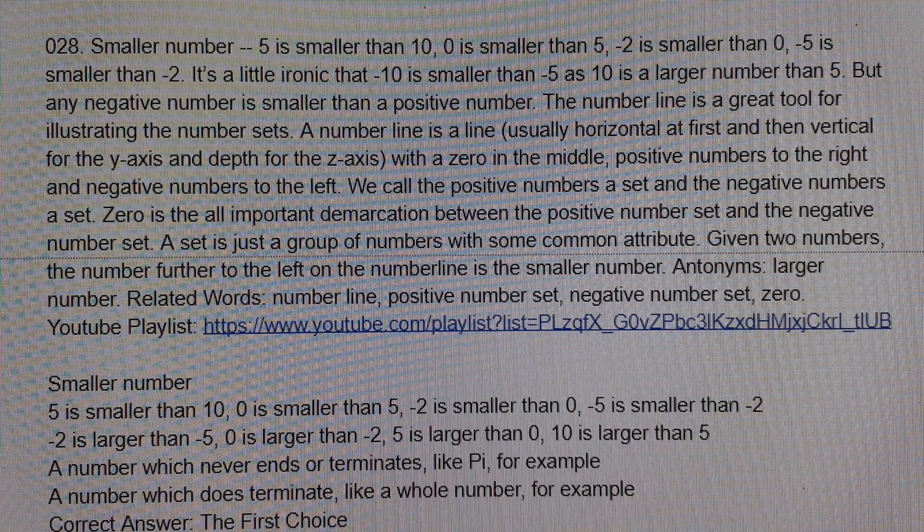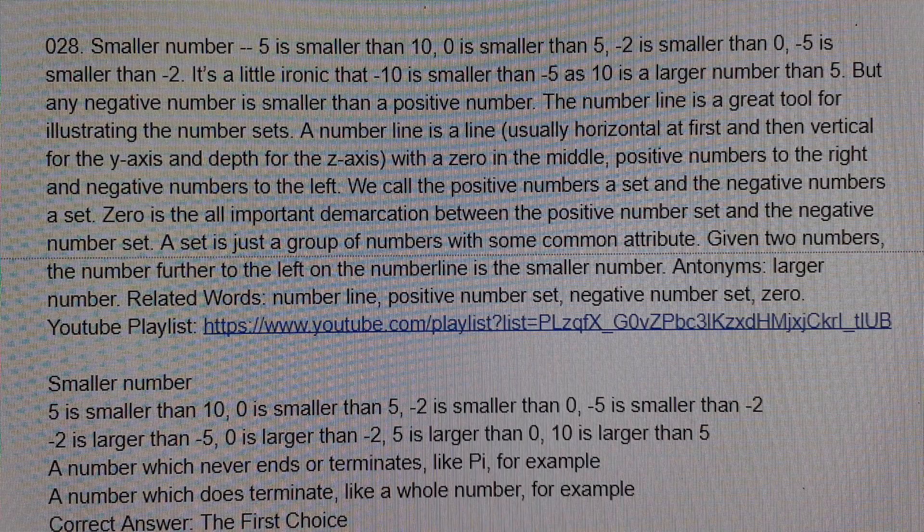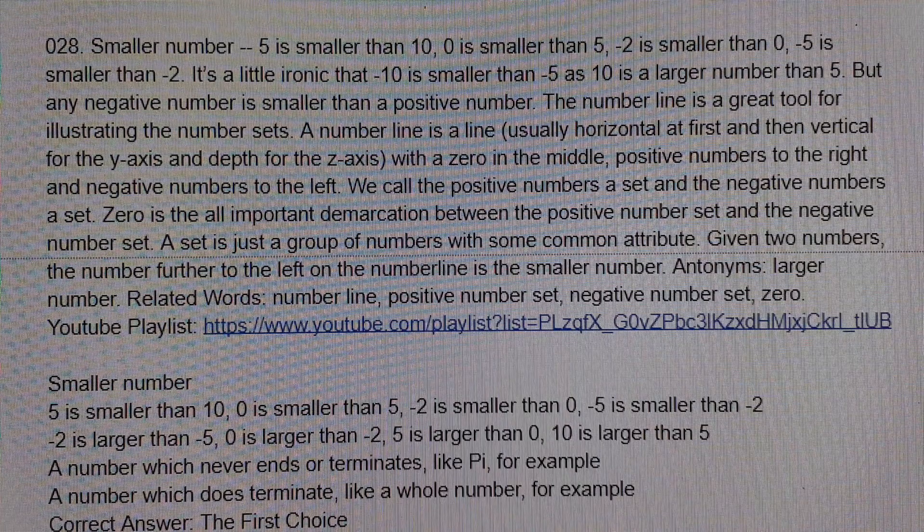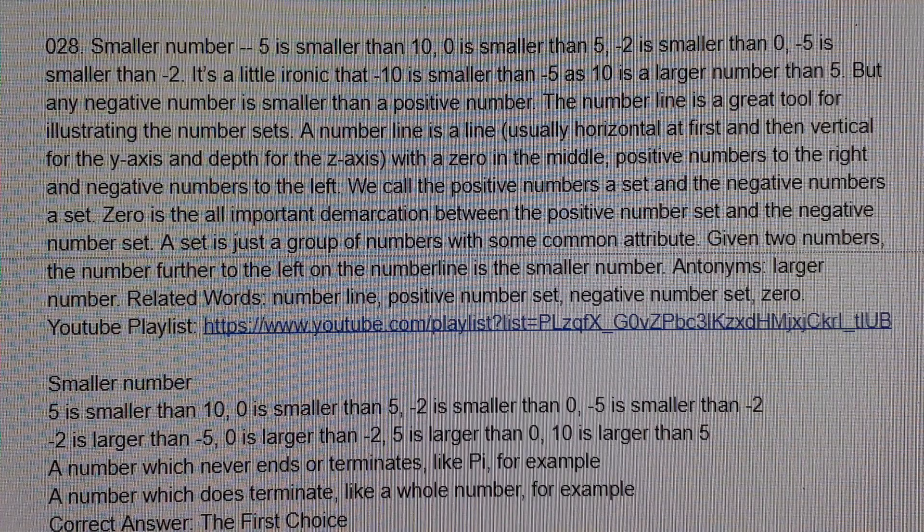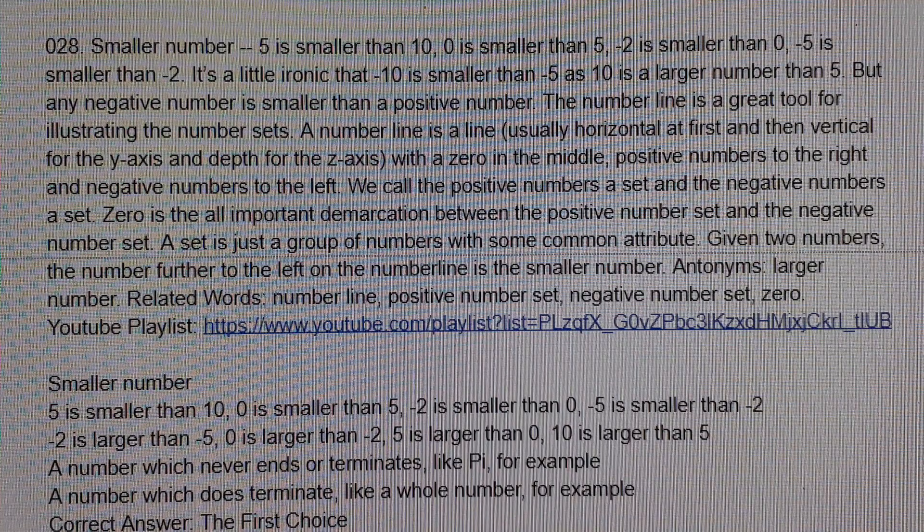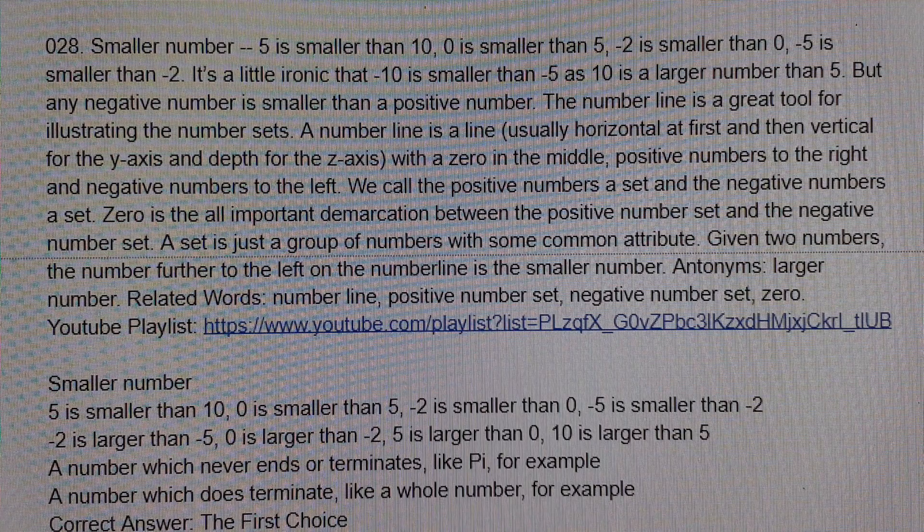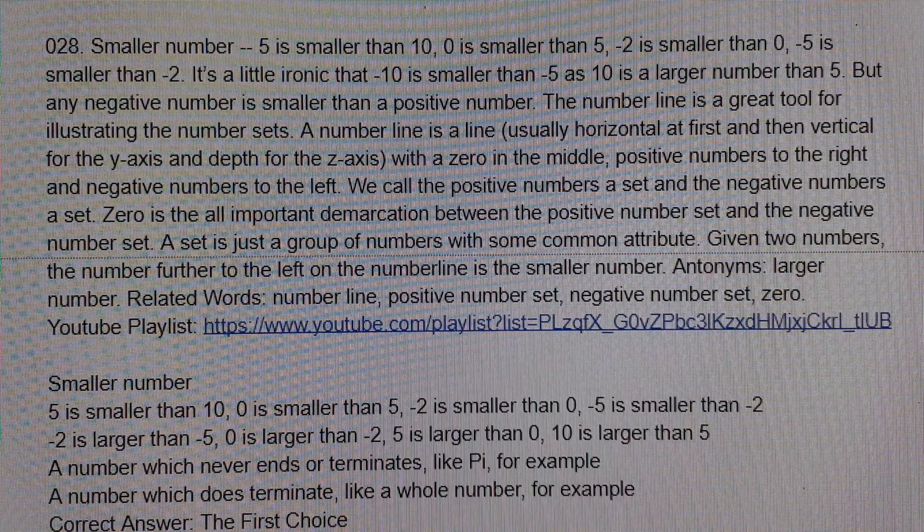With 0 in the middle, positive numbers to the right and negative numbers to the left. We call the positive numbers a set and the negative numbers a set. 0 is the all-important demarcation between the positive number set and the negative number set.